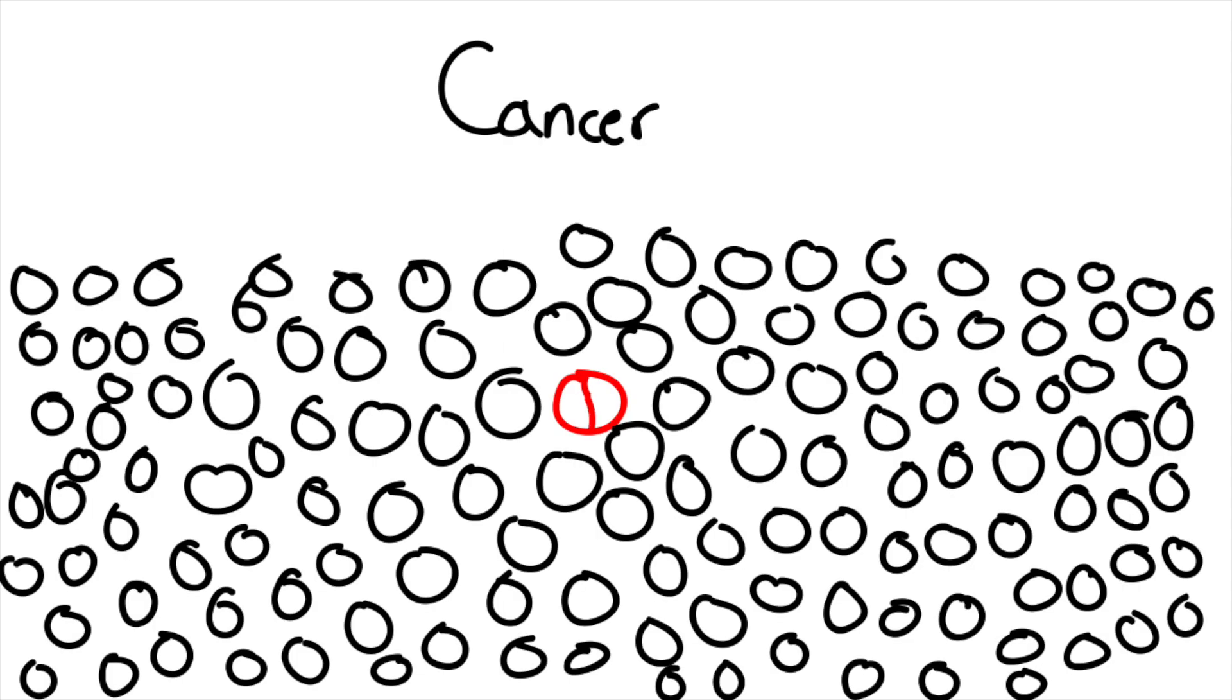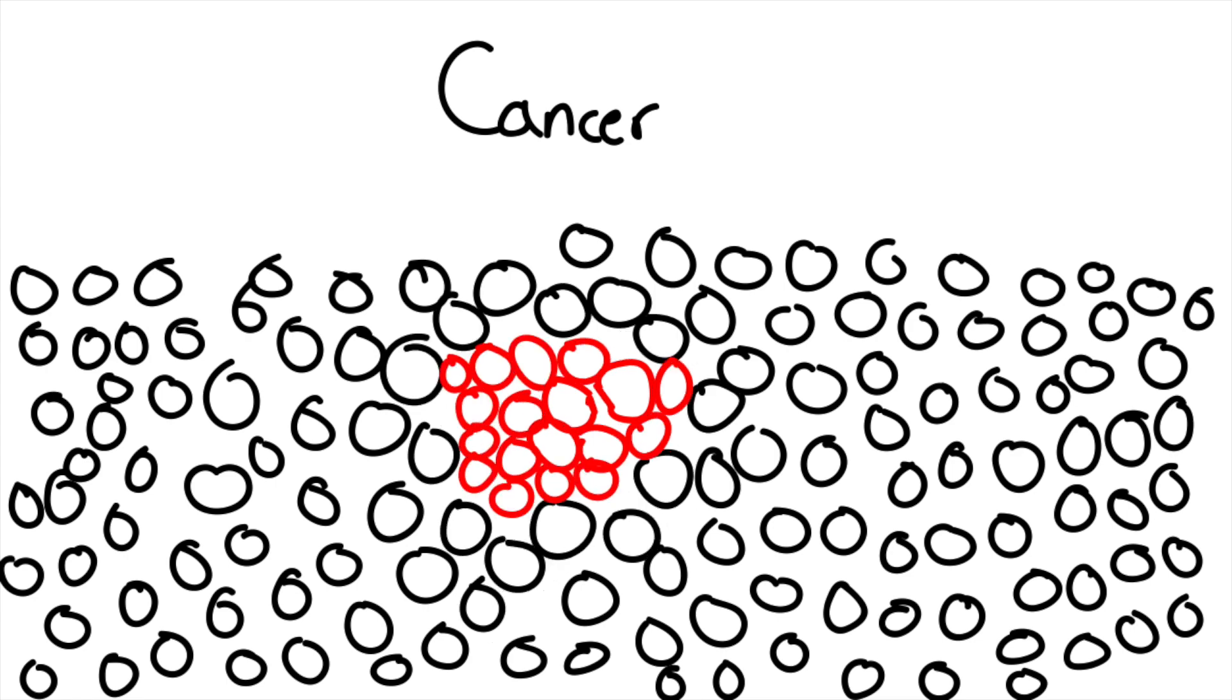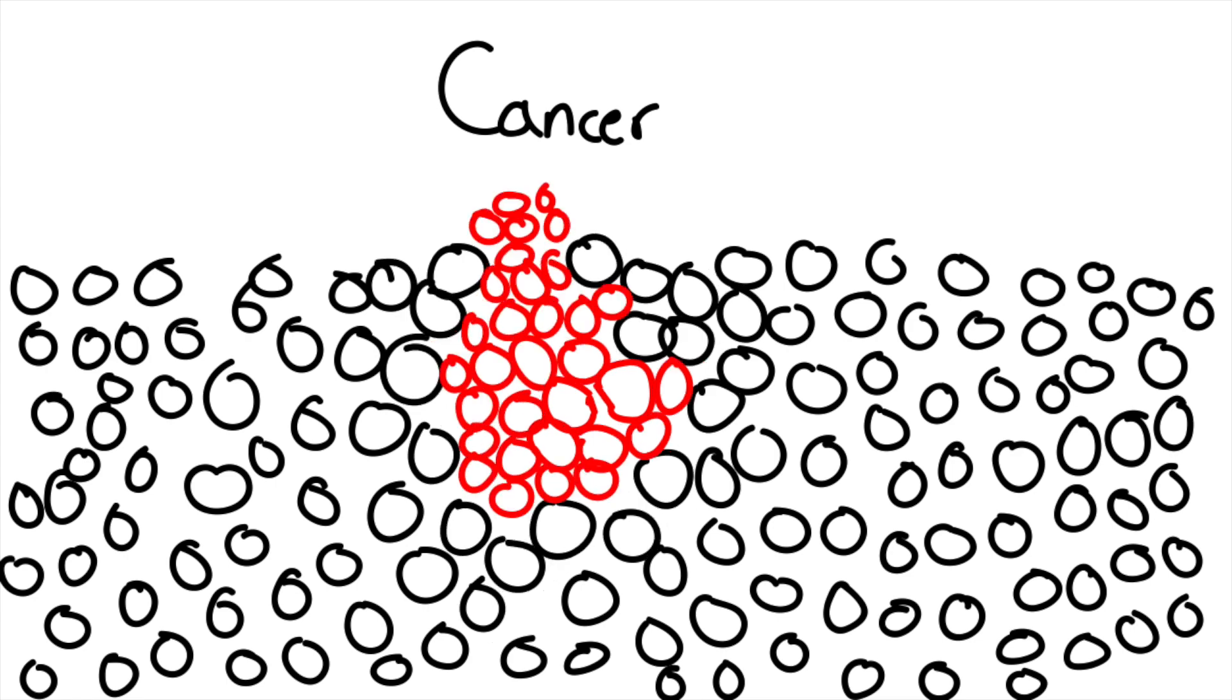Now just to briefly recap, cancer is where a cell in the body divides uncontrollably creating a tumor. This tumor can lead to death, especially if it metastasizes, which is where it breaks up and travels around the body forming tumors everywhere.